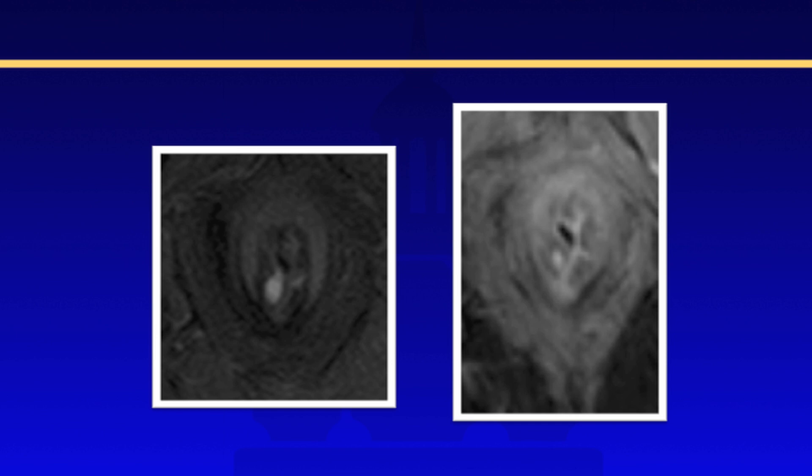Dedicated axial T2-weighted image on the left and axial post-contrast image on the right demonstrates a small intersphincteric fistula at 7 o'clock. Please note that the fistula is between the internal and external sphincters and is nicely shown here in a diagram.